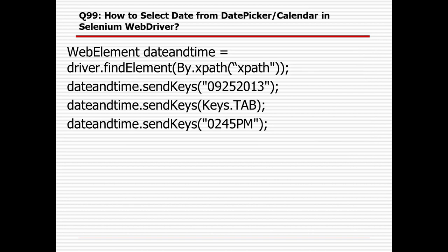How to select a date or time from a date picker or calendar in WebDriver: first, identify the element and store it in a WebElement variable (e.g., 'dateTime'). Then use sendKeys() to provide the date value, press Keys.TAB to move to the next field, then provide the time — for example, AM or PM.